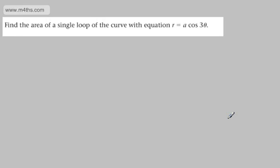This is now our third video looking at finding the area bounded by polar curves. In this question, we're asked to find the area of a single loop of a curve with the equation r equals a cos 3θ. First, let's introduce this curve, as we haven't looked at this one yet.